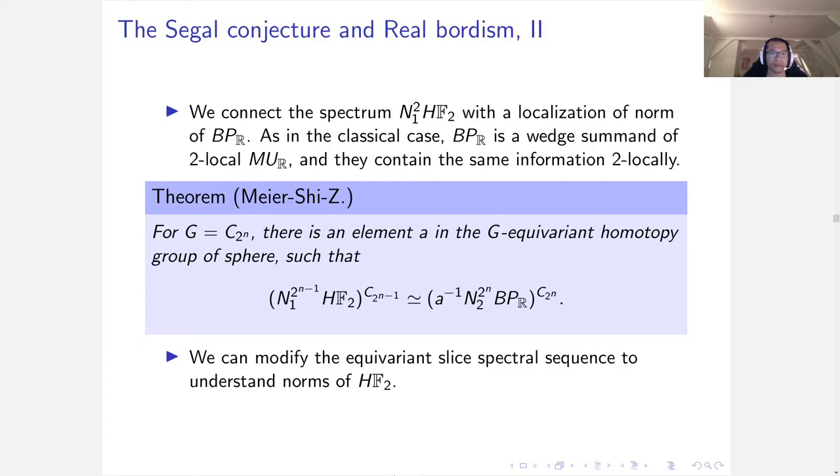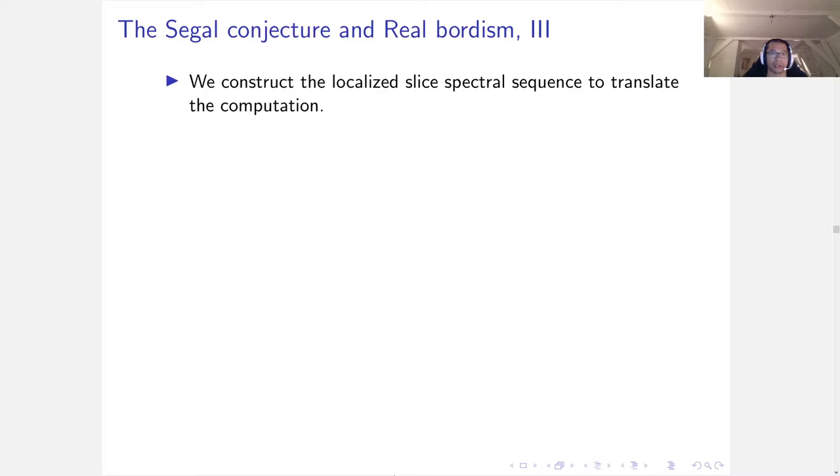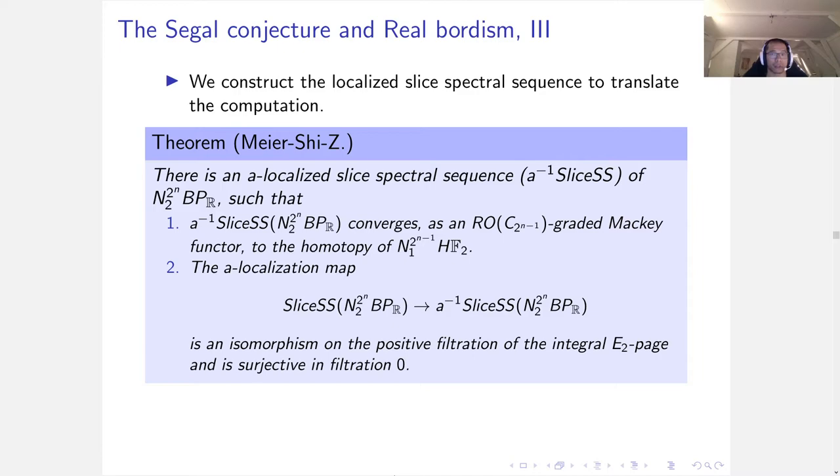Furthermore, we can modify the equivariant slice spectral sequence to go in well with this localization to understand norm of HF2. We construct the localized slice spectral sequence to translate the computation. This theorem says there is a localized version of slice spectral sequence of norm of BP_R. First, it computes the homotopy groups of norm of HF2. Second, it looks very similar to the original slice spectral sequence used in Hill-Hopkins-Ravenel.